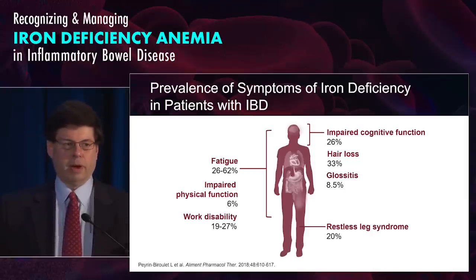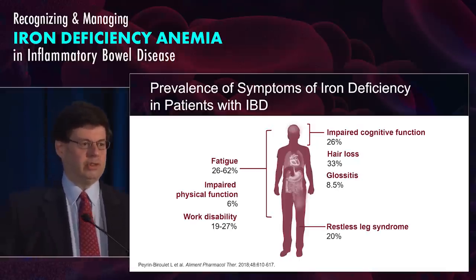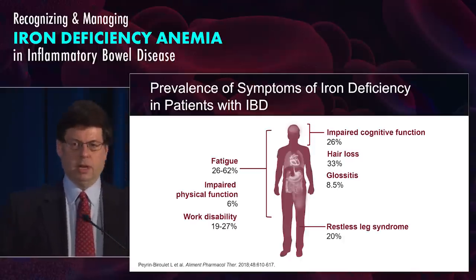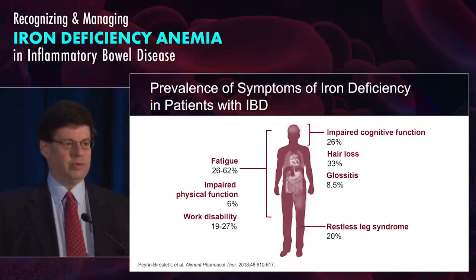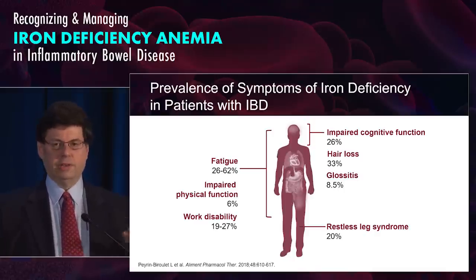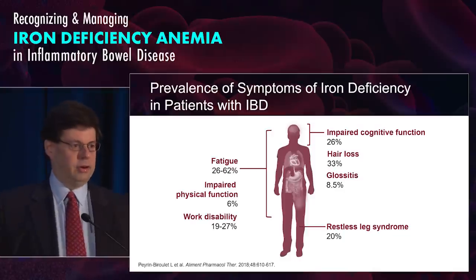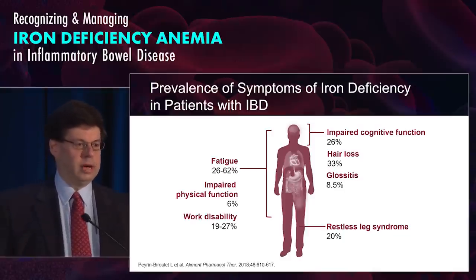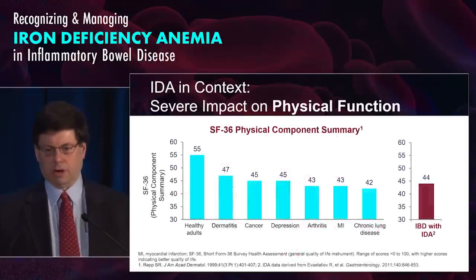Cognitive impairment and hair loss are also associated symptoms. Hair loss can be associated with many things in IBD — corticosteroids, immune modulators, rarely biologic therapy, severity of disease itself, zinc deficiency — but clearly iron is often overlooked, and many patients walk around with anemia and are undertreated in clinical practice.